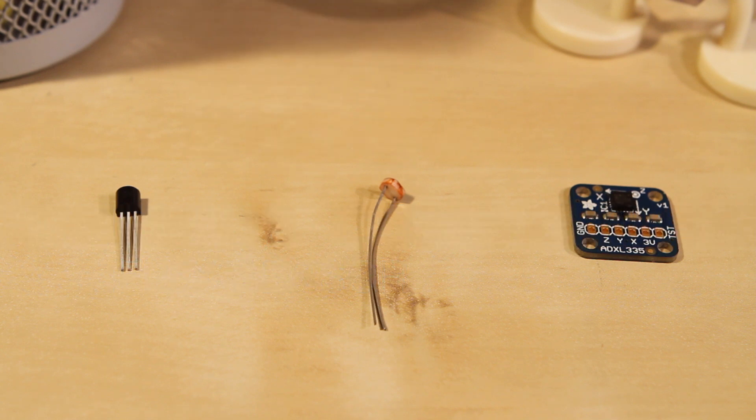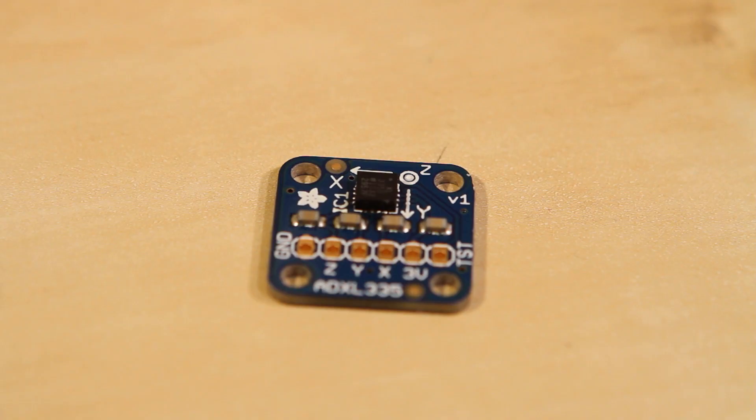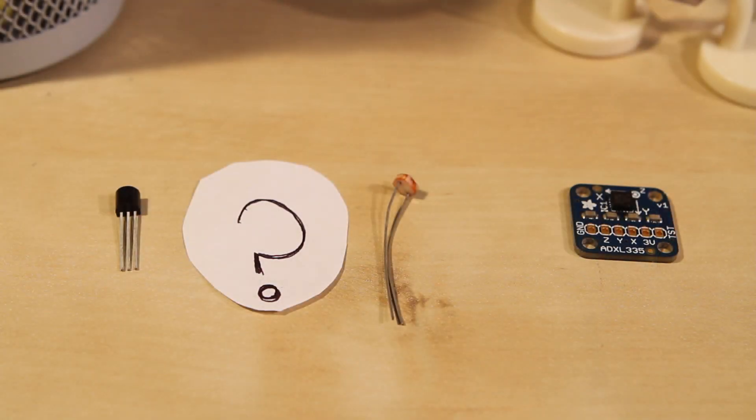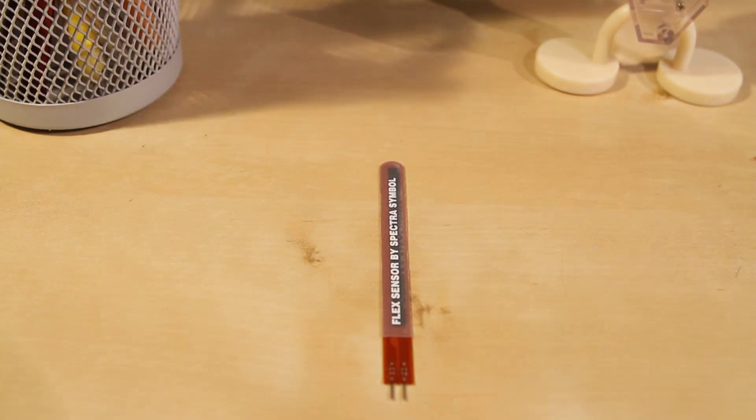We have sensors for a lot of things: detecting temperature, light, motion, and electrical screw-ups. But what about bending? That's crazy! Don't worry, that's why they invented the flex sensor.